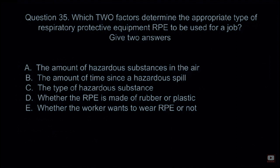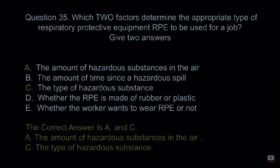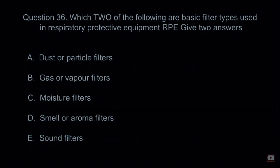Question 35: Which two factors determine the appropriate type of respiratory protective equipment (RPE) to be used for a job? Give two answers. A: The amount of hazardous substances in the air. B: The amount of time since a hazardous spill. C: The type of hazardous substance. D: Whether the RPE is made of rubber or plastic. E: Whether the worker wants to wear RPE or not. The correct answers are A and C — the amount of hazardous substance in the air and the type of hazardous substance.